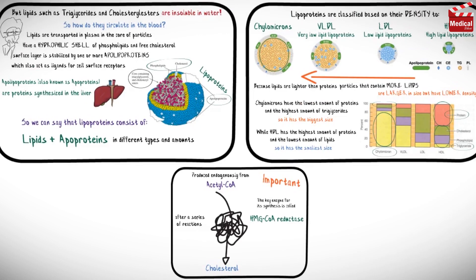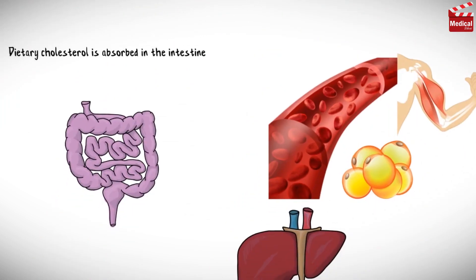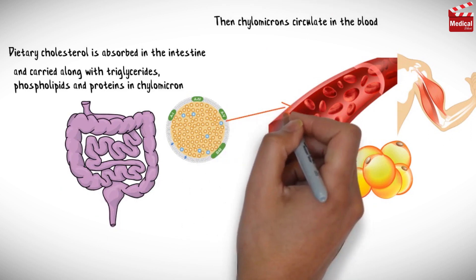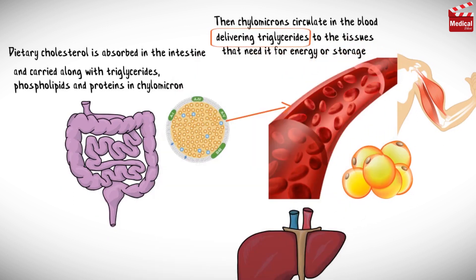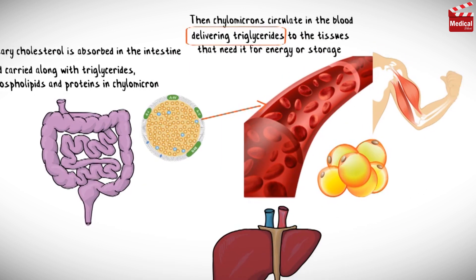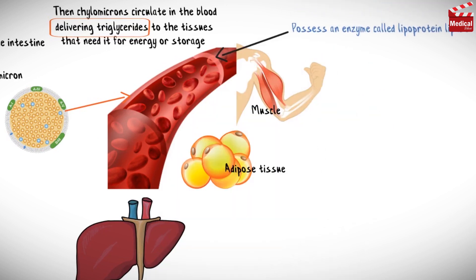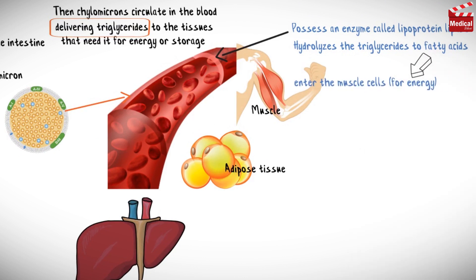So let's see their journey and their functions. Dietary cholesterol is absorbed in the intestine and carried along with triglycerides, phospholipids and proteins in chylomicrons. Then chylomicrons circulate in the blood, delivering triglycerides to the tissues that need it for energy or storage. In muscle and adipose tissue, the capillaries possess an enzyme called lipoprotein lipase that hydrolyzes the triglycerides to fatty acids. Then fatty acids enter the muscle cells for energy and adipocytes for storage.